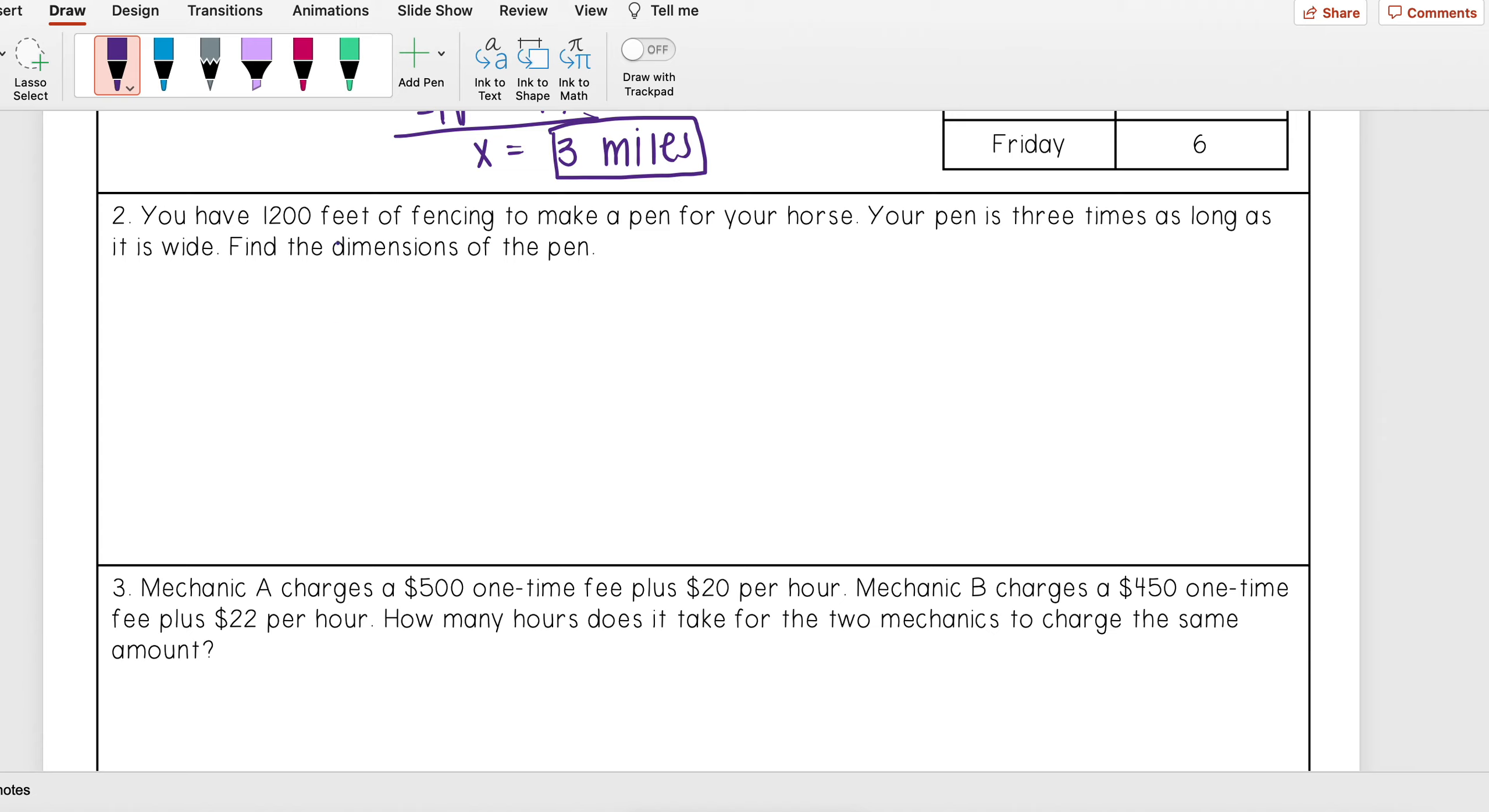Number 2 says you have 1200 feet of fencing to make a pen for your horse. Your pen is 3 times as long as it is wide. Find the dimensions of the pen. Okay, so let's break this down a little bit. Dimensions means I want to find length and width. Let's look and see what information we have. We know that we have 1200 feet of fencing. Well, that's going to be my perimeter. So you put fencing around the perimeter of your pen.